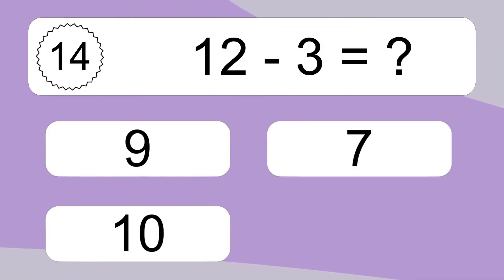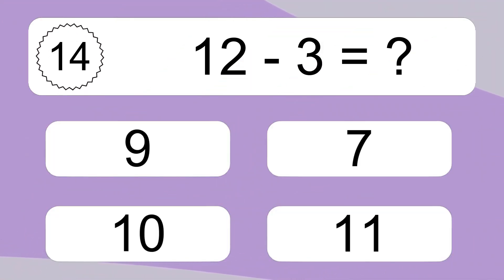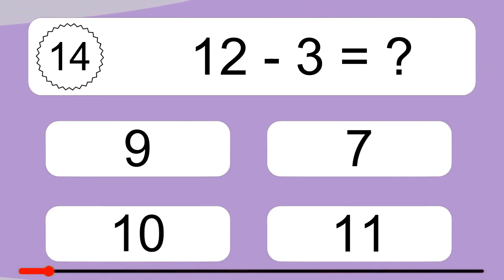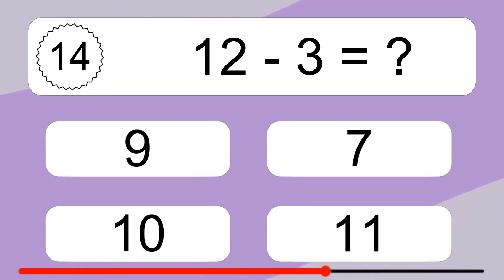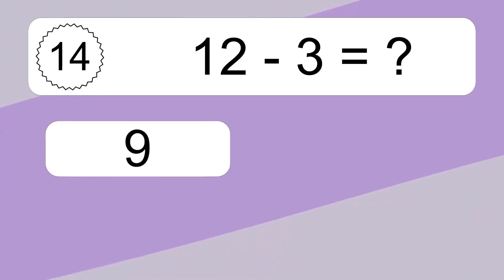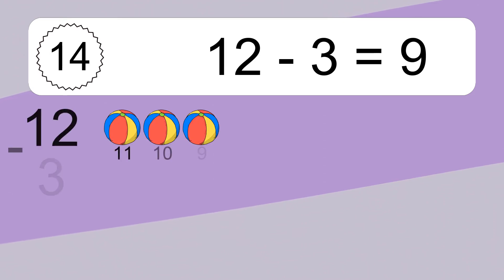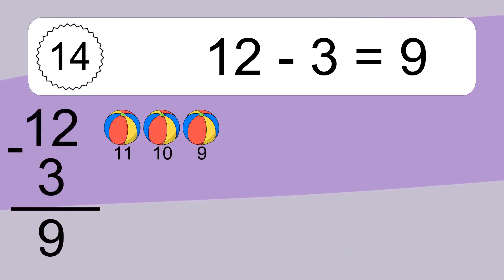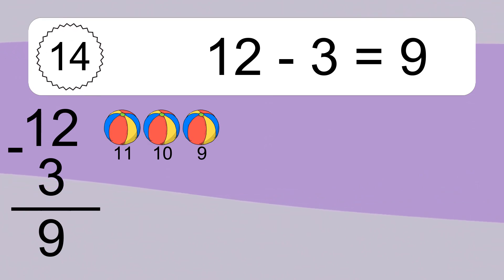12 minus 3 equals what? 12 minus 3 equals 9. Let's count it: 11, 10, 9.